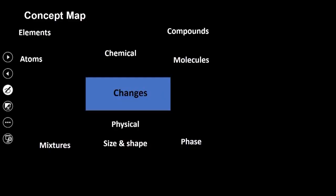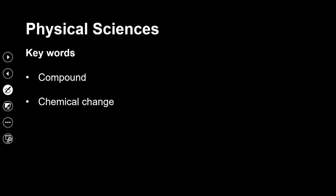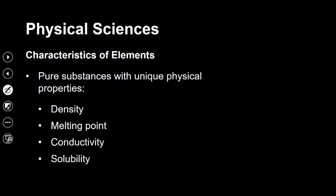By now we know that a physical change involves largely a change in shape and size of a material, however the chemical and physical composition of that material remains the same. Now we want to look at what exactly happens in a chemical change — this is the second type of change we want to discuss. Some key words to remind ourselves of: what exactly is a compound? Compounds are pure substances, and they are made of atoms of different elements.